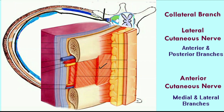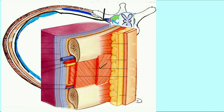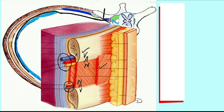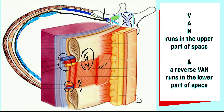In this diagram I will show the relation of the vein, artery, and nerve in the intercostal space. These structures are present beneath the subcostal groove of the rib. In the upper part of the space, the relation is V-A-N: vein, artery, nerve — the mnemonic is VAN. In the lower part of the space, we also have a vein, artery, and nerve but in the reverse order: nerve, artery, vein. So VAN runs in the upper part, and a reverse VAN runs in the lower part.